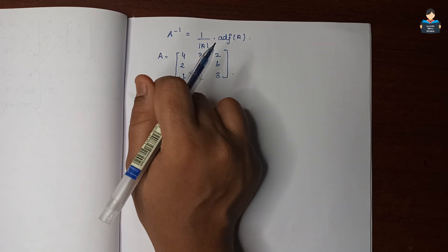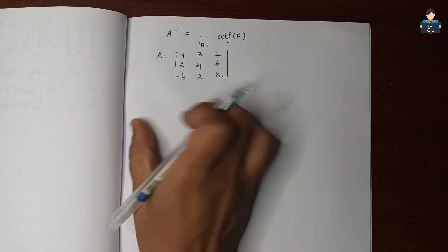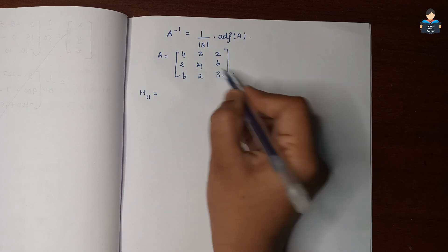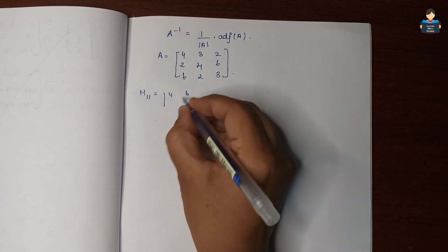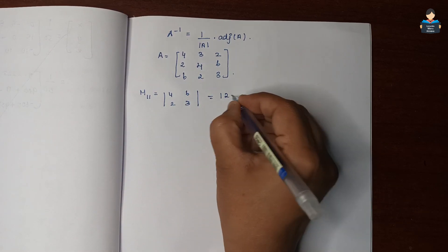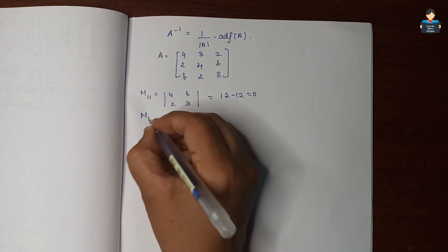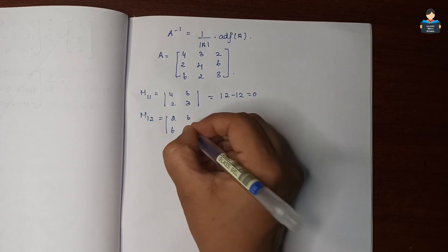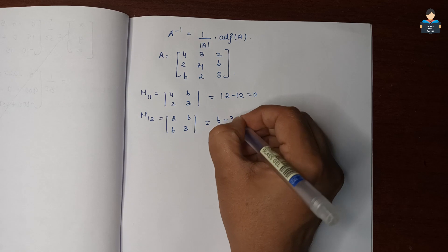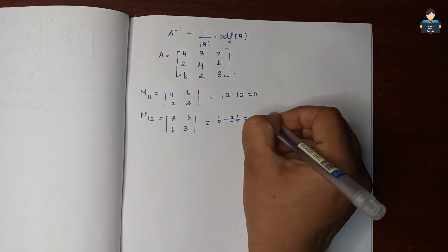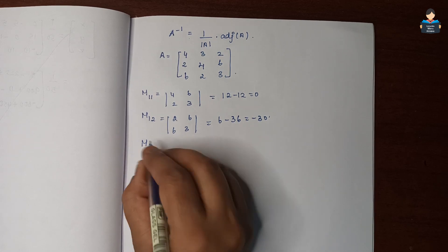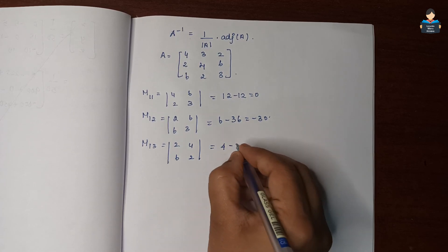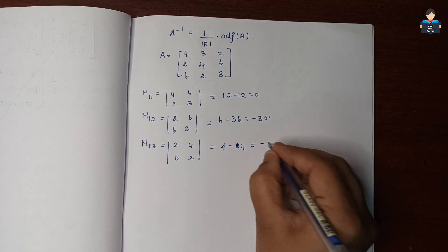Finding the first row minors: M11 = |4, 6 / 2, 3| = 12 − 12 = 0. M12 = |2, 6 / 6, 3| = 6 − 36 = −30. M13 = |2, 4 / 6, 2| = 4 − 24 = −20.